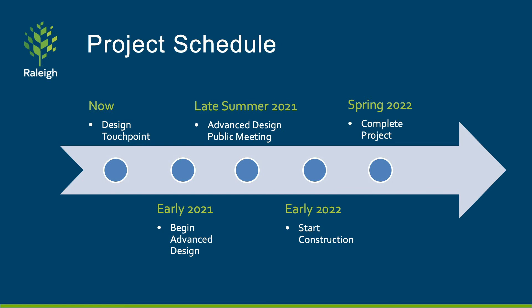Now that we have discussed the project's history and current design, let's talk about the next steps. After collecting comments from this virtual public meeting, the project team will discuss what adjustments, if any, need to be made to the design and will begin the advanced design stage. You may notice members of the project team working along the roadway performing additional field investigations this spring to assist in the development of the advanced design. When the advanced design is complete, the project team will conduct another public meeting to help explain how the design has progressed. We anticipate that public meeting to occur in the late summer of 2021. After addressing any items in the advanced design, final plans will be developed and the city will select a construction contractor.